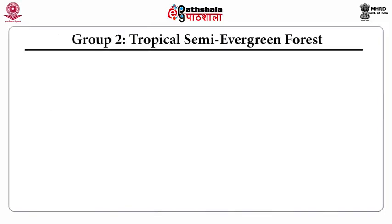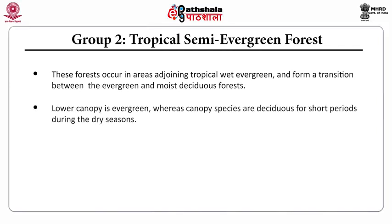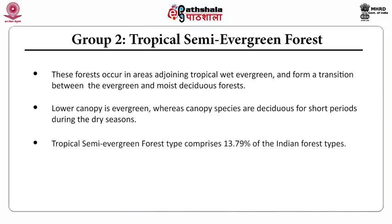We will now discuss Group 2, the tropical semi-evergreen forests of India. These occur in areas adjoining the tropical wet evergreen forests and form a transition between the evergreen and moist deciduous forests. The lower canopy is evergreen, whereas the canopy species are deciduous for short periods during the dry season. Tropical semi-evergreen forest type comprises 13.79% of Indian forest types.